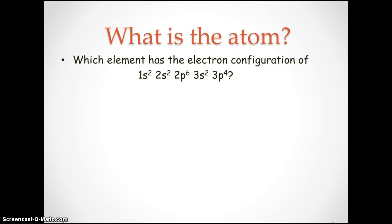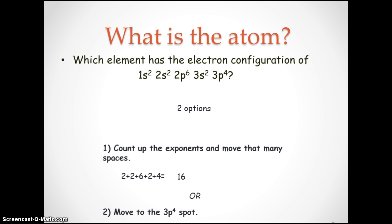So now let's work the opposite direction. Now we're given the electronic configuration and we need to find the element. So we have two options. We can count up the exponents and move that many spaces because the exponents is the number of electrons. And so if we add 2+2+6+2+4, we get an answer of 16. And then the other option is just moving on the chart and we'd move to the 3p⁴ spot.